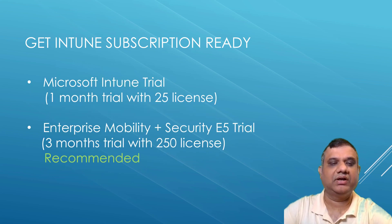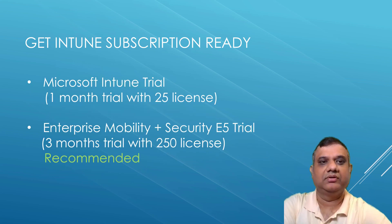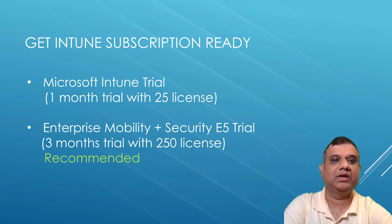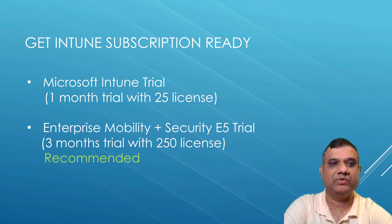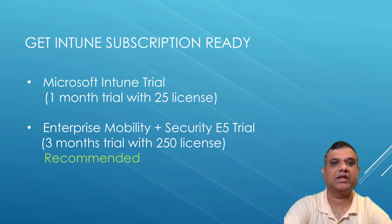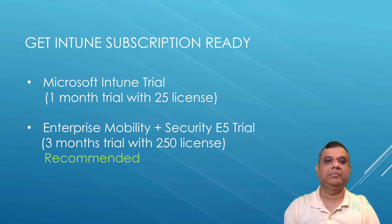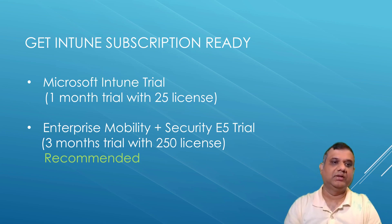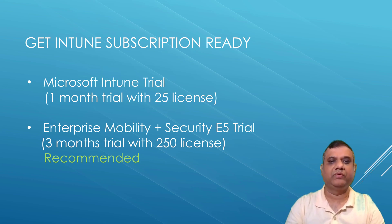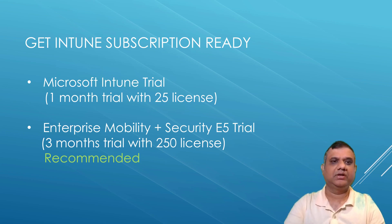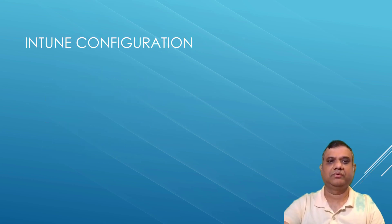We are just making sure that our Intune subscription is ready. In the last video I talked about two things: the Microsoft Intune trial version, which comes with one month of trial with 25 licenses, and the EMS Enterprise Mobility Plus Security E5 trial, which comes with three months of trial with 250 licenses. The second one is the recommended one. Once you are ready with this subscription, we can proceed with the Intune configuration.